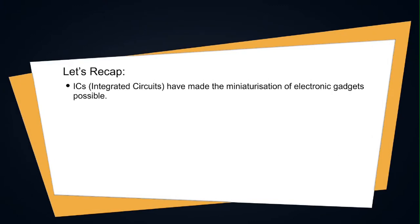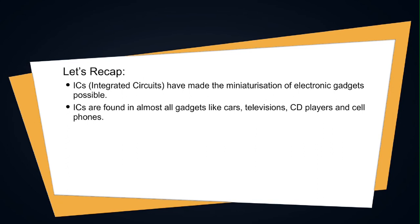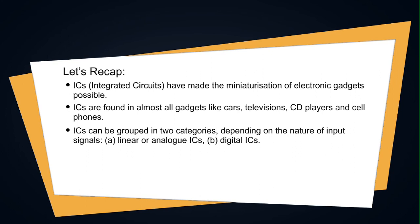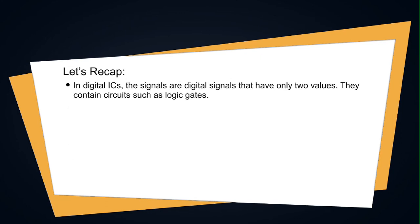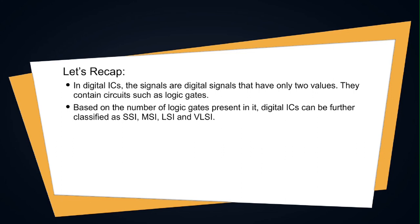To recap: integrated circuits have made the miniaturization of electronic gadgets possible and are found in almost all gadgets like cars, televisions, CD players, and cell phones. ICs are grouped into two categories — linear or analog ICs, where input signals change smoothly and continuously, and digital ICs, where signals have only two values and contain logic gates. Digital ICs are further classified as SSI, MSI, LSI, and VLSI based on the number of logic gates.